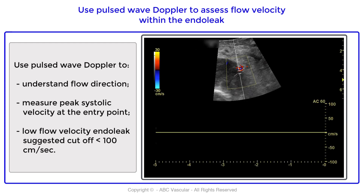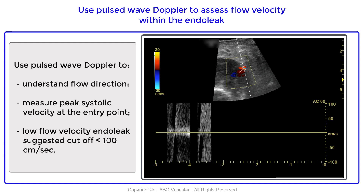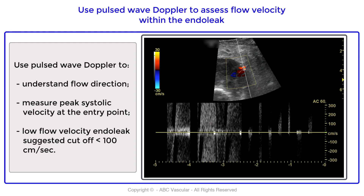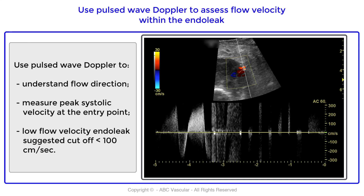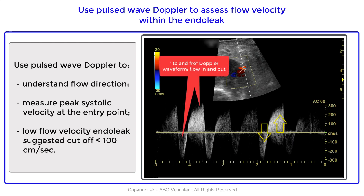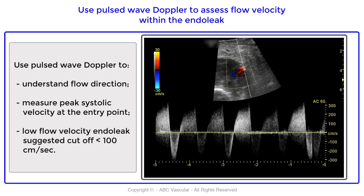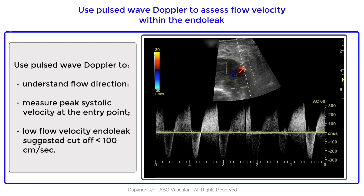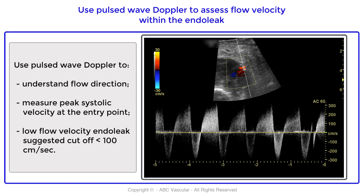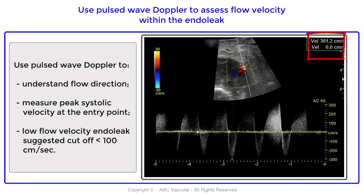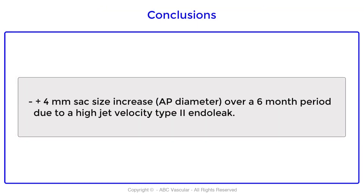There is turbulence visible, indicative of high jet flow. Applying pulse wave Doppler at the entry point gives the typical to-and-fro flow pattern characteristic of a type 2 endoleak. The measured peak systolic velocity is 300 cm/s. The cutoff value to define a high-velocity endoleak is 100 cm/s. In conclusion, we have identified a type 2 endoleak with high jet velocity.